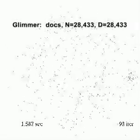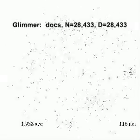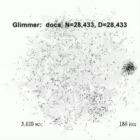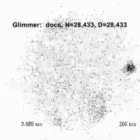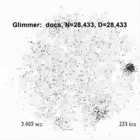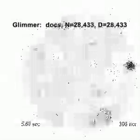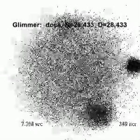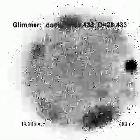This large, real-world digital library dataset has 28,000 points representing documents, but also 28,000 dimensions. It is sparse, where each point has only a few non-zero dimensions. Glimmer succeeds in computing useful structure over the course of this 20-second run.